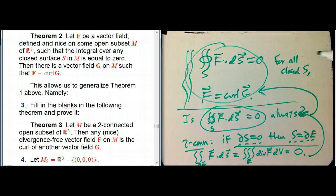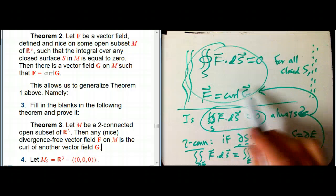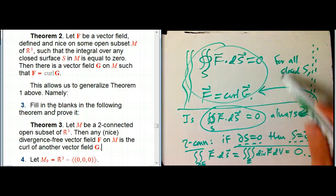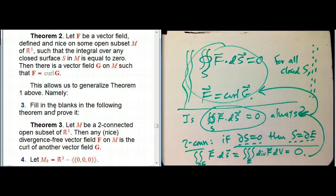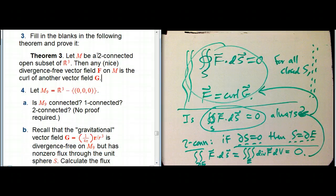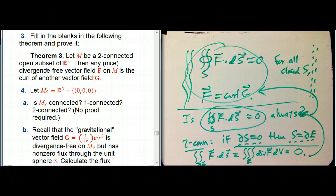And then the theorem says that it's the curl of G. I hope this is a little disappointing — I really want to see this theorem proved, but there's only so much we can do at this level. The main thing is I wanted to make this connection between a certain kind of condition on the topology of our space and the relationship of these two concepts — divergence-free and being a curl — which are closely linked but not usually identical. When we translate it to forms, it's going to look very, very pretty.